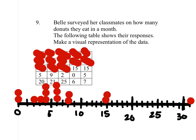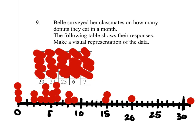We got two 15s. A 5. A 9. Another 2 and another 0. A 5. A 20. A 21. A 25. A 6. Well, another 6. I ran out of space there. And then a 7.